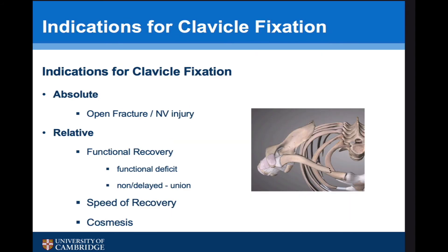The absolute indications for clavicle fixation are an open fracture or neurovascular injury, which are relatively unusual. All other indications are relative — these relate to functional recovery, such as a functional deficit due to fracture position or issues with scapulothoracic function, or when the prognostic indicator suggests a very high chance of going on to non-union. Another indication, particularly in sports, is speed of recovery. If you fix someone's clavicle within a week or two, they will be able to return to most sports — not necessarily contact sports. I work near Newmarket and jockeys will come in, I'll fix them up, and they will be back riding within a week or two.